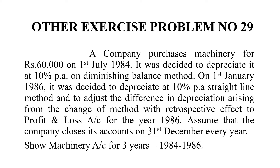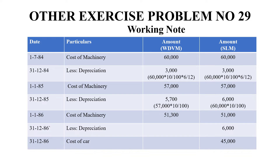In this case, we will change the return on value method. We can apply this value method to its credit side. For the old method or new method, we will take the P&L account — profit and loss account. This is the first difference. In this problem, every year in December it will get closed. So, 60,000 into 10 by 100 into 6 by 12 — that is Rs. 3,000. So, using the return on value method or straight line method, we will get Rs. 57,000. The cost of the machinery as on 1/1/85 is Rs. 57,000.